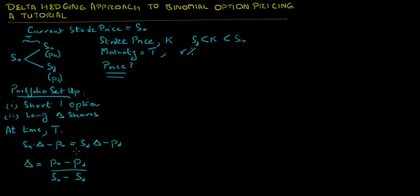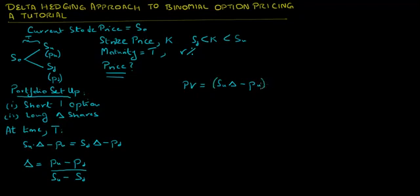Since this delta gives us the same value of the portfolio regardless of whether the stock goes up or down, there is no risk or uncertainty about the portfolio's value at maturity. In that case, the present value of this portfolio equals the stock price in the up scenario times delta minus the payoff of the option when the stock price goes up, discounted at the risk-free rate.